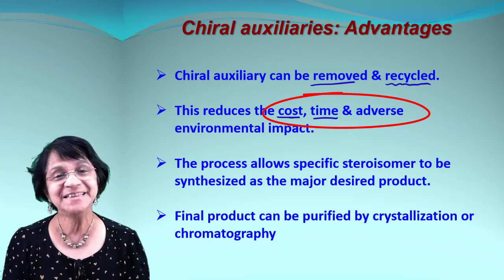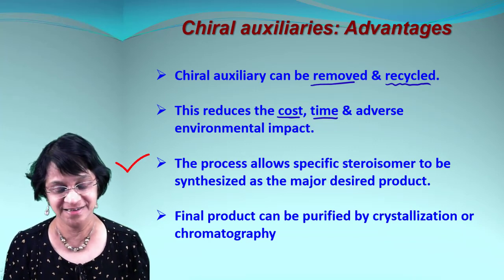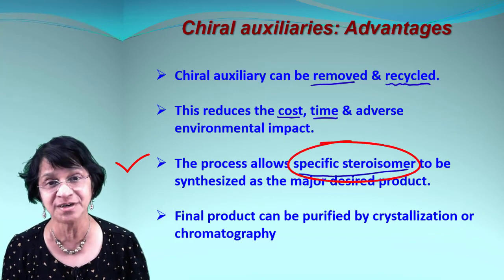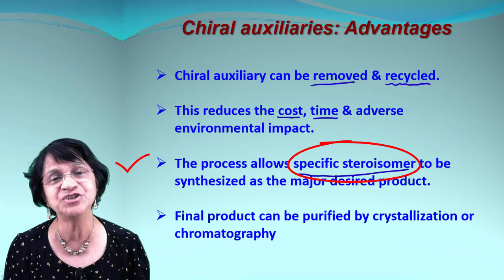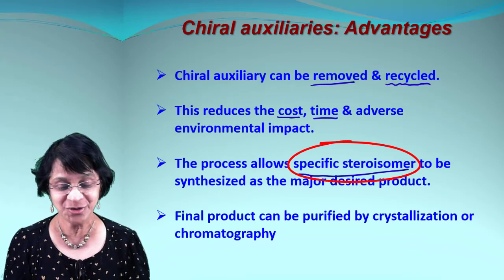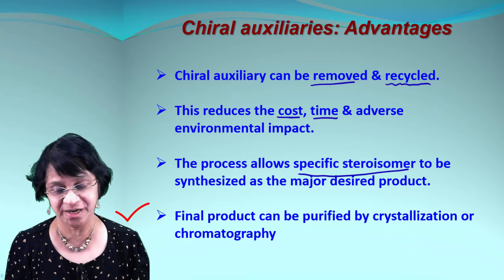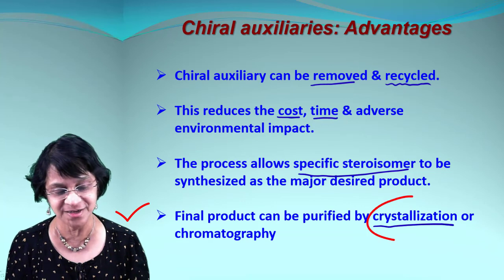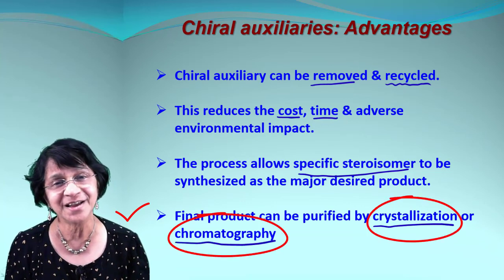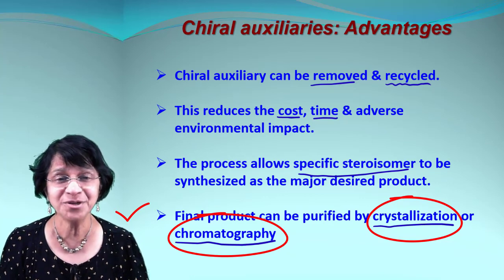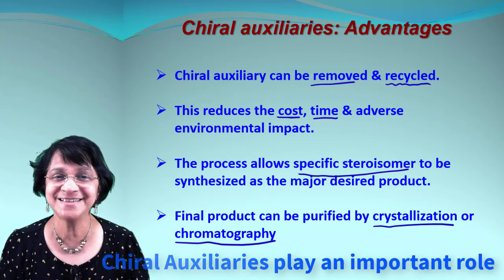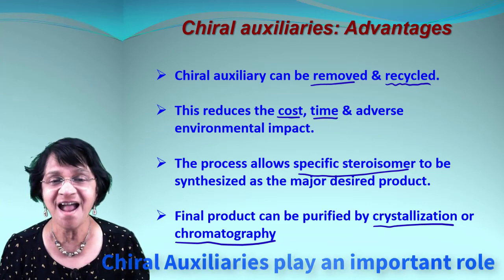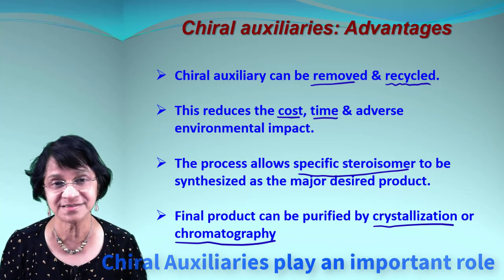Using a chiral auxiliary gives you the specific stereoisomer as the major desired product. The final product will still need some purification, but that can be done simply — either by crystallization or by chromatography. So with all these advantages, chiral auxiliaries are definitely a big deal and are very helpful in organic synthesis.